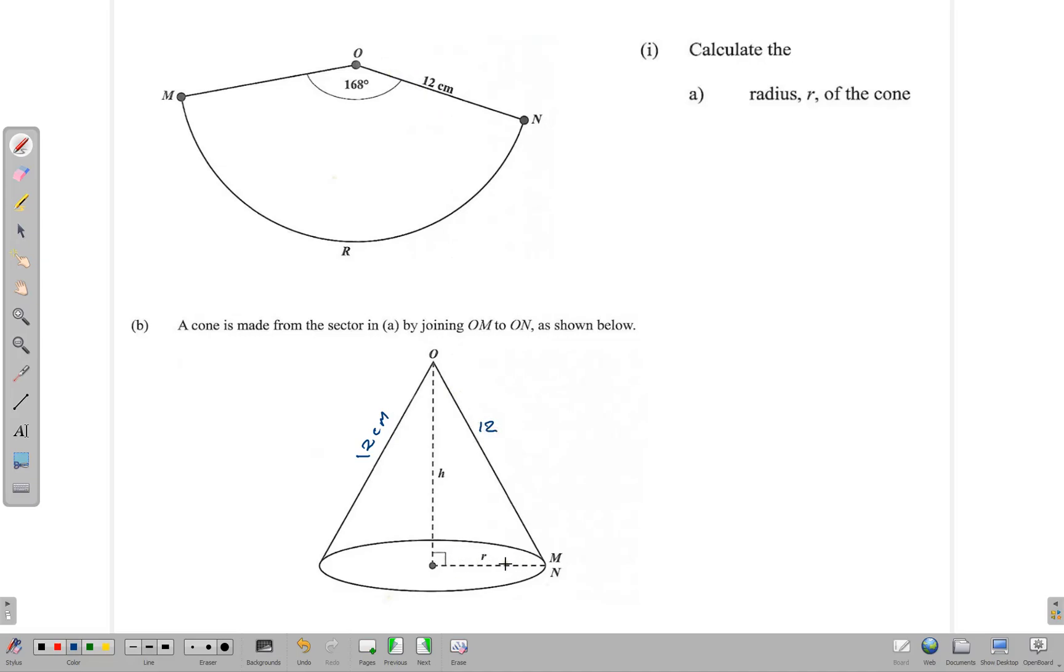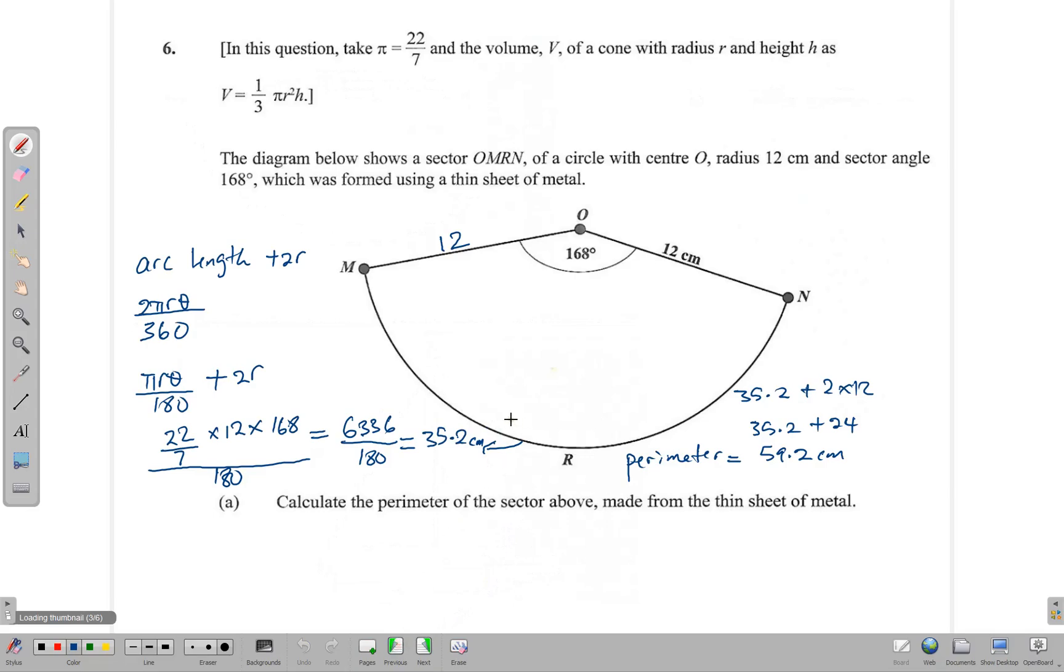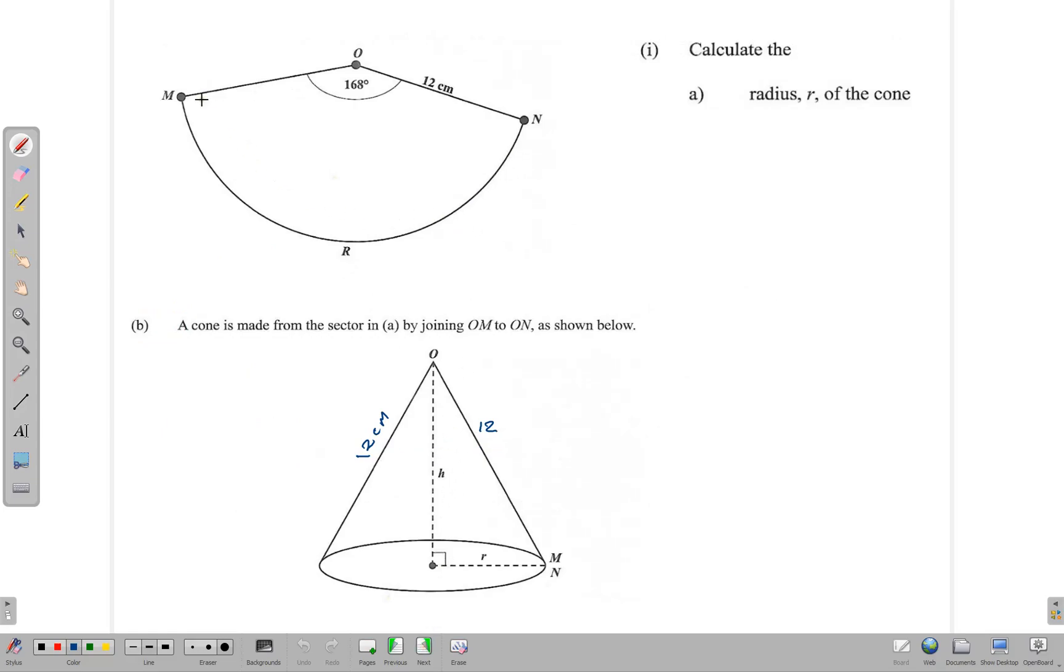The radius of the cone can be found with the answer we just obtained. We worked out that the length of the arc was 35.2 centimeters. What happens here is that the length of the arc, this MRN line, becomes the circumference. So because we know that this is 35.2, this circumference here is also 35.2.